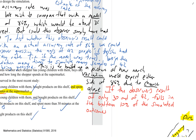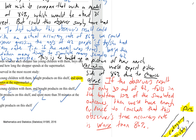If the observer's result of only 30 out of 42 falls in the bottom 10% of the simulated outcomes, then that would give us strong enough evidence to say that their actual accuracy rate is worse than 86% — it'd be very unlikely for them to do that badly if their accuracy rate was normally 86%. However, if it's not in the bottom 10%, then we wouldn't have enough evidence to make that claim.